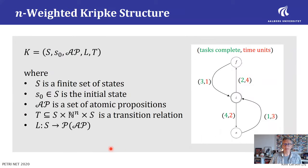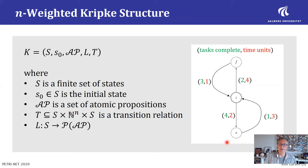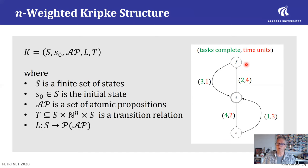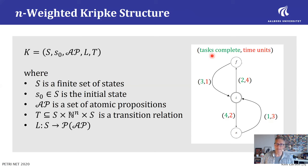The basic model we look at is that of Kripke structures extended with weights. We have states — for example, a task scheduling process that can be idle, or processing in a fast mode or a slow mode. On the transitions, we have added vectors of weights as natural numbers — here, pairs of number of tasks completed and time units spent for that particular transition.